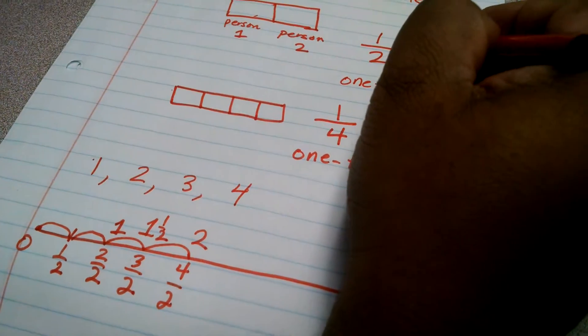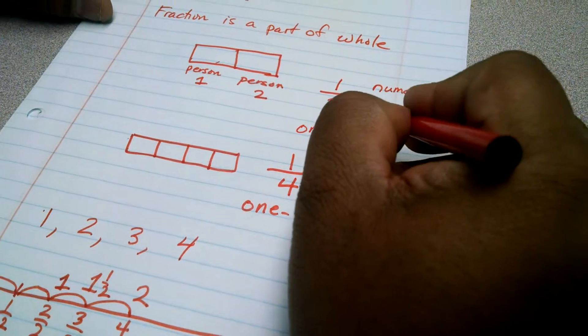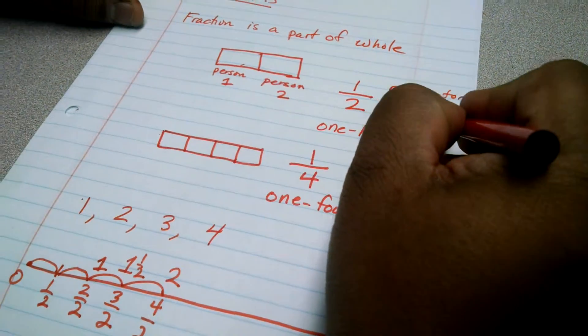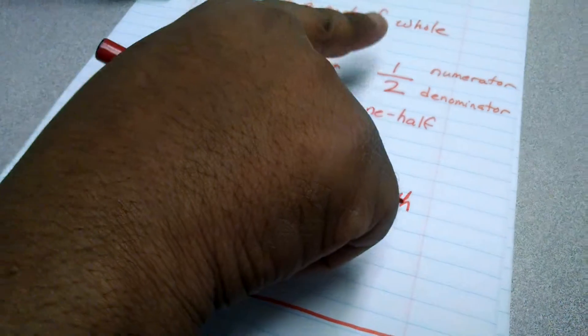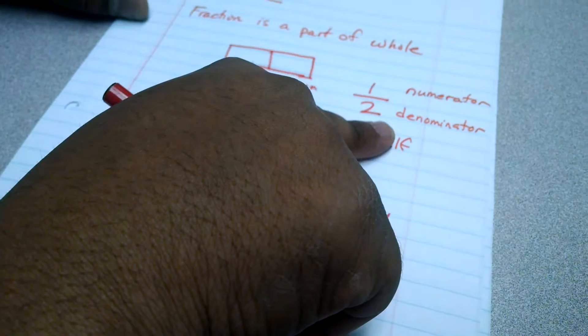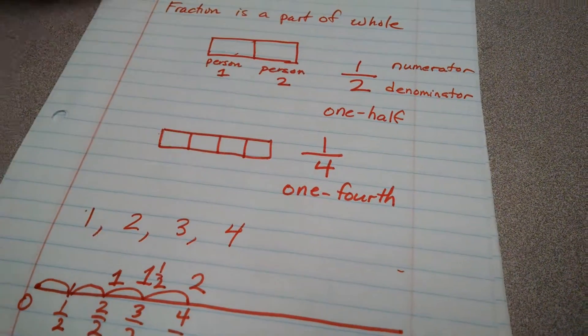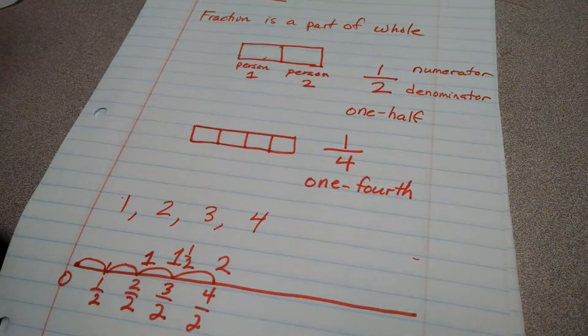The top number is called the numerator and the bottom number is called the denominator. The best way for me to remember that is the bottom number is down, so denominator down. This is just a brief introduction to fractions. Stay tuned for part two.